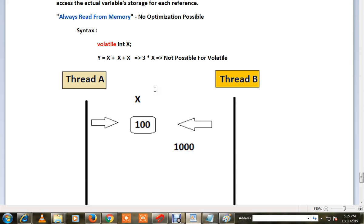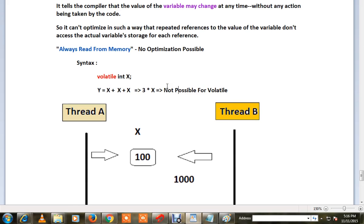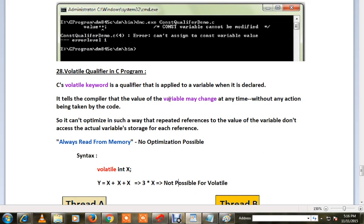Volatile plays an important role in getting the value from memory. Where can we use this volatile qualifier? In thread communication or in any variable that will be updated by an external program. This is brief information about volatile. Thank you and all the best.